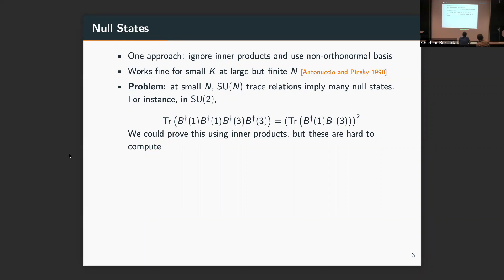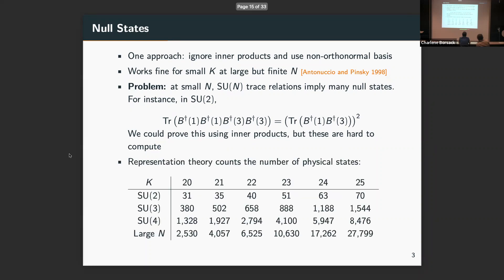To show you that we really need to do this, to show the magnitude of the problem, we can use representation theory to count, not to enumerate, but simply to count the number of physical states, the ones that are not null. I've chosen a representative range of K here, say up to K equals 25, which is a pretty good place to be for the continuum limit. So for large N there are 28,000 states we would write down. For SU(3), SU(4), only several thousand of them are physical. For SU(2), less than a hundred are physical. So we really need to solve this problem if we want to have an honest DLCQ approach to these small N theories.